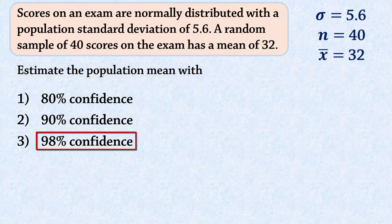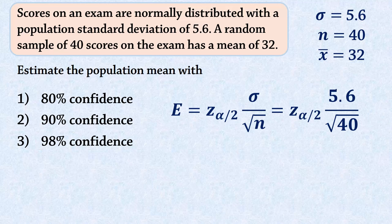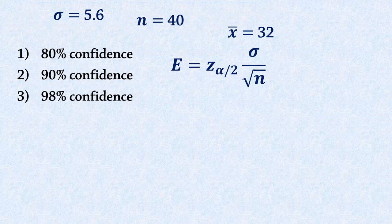The margin of error is going to be Z alpha over 2 times 5.6 divided by the square root of 40. We now need to find the critical value for each confidence level.